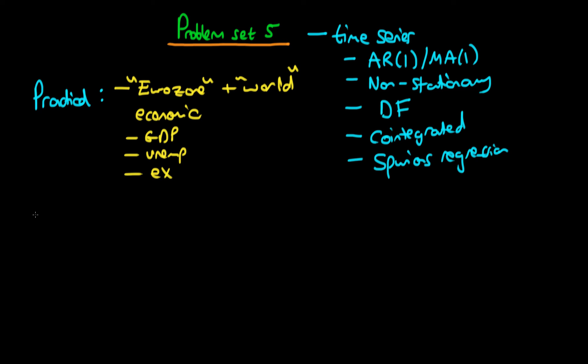The theoretical part of this problem set is going to cover what are the conditions for a particular type of process to be stationary. We're going to be looking at that in regard to an ARMA(1,1) process. We're also going to look at the conditions for an AR2 process to be stationary, and what it means for two processes to be co-integrated.